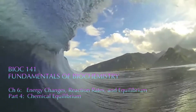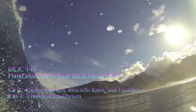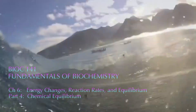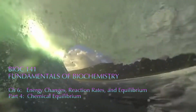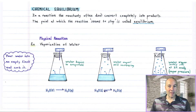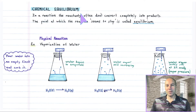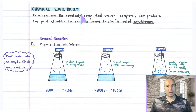Aloha Biochem! In this video we continue in Chapter 6 and discuss Chemical Equilibrium. This lecture brings us into the topic of Chemical Equilibrium. In the previous lecture we dealt with reaction rates, which concern how fast a chemical reaction goes. Equilibrium deals with how far they go.